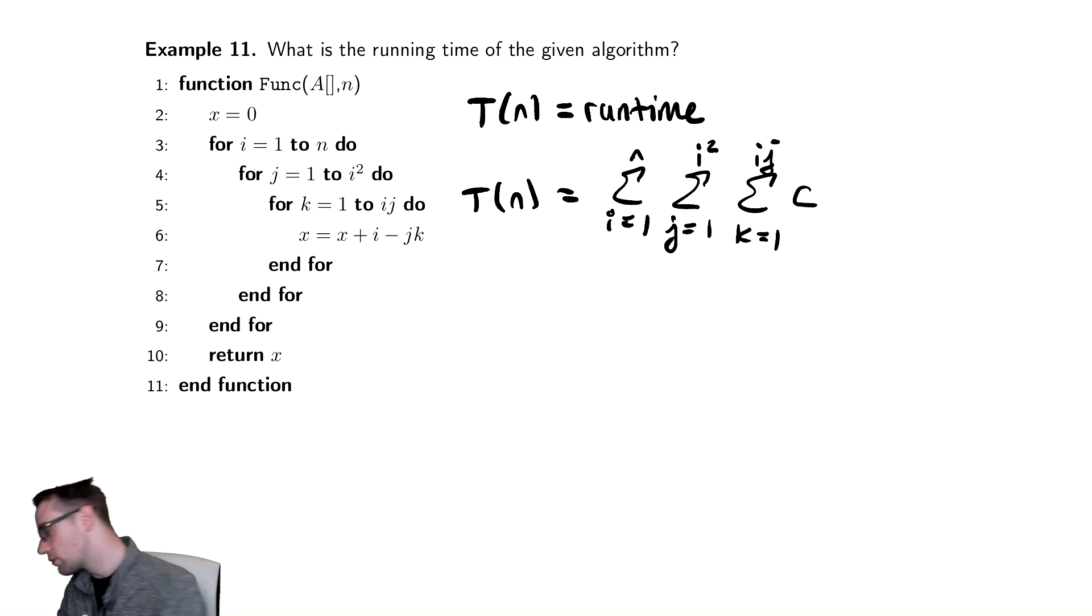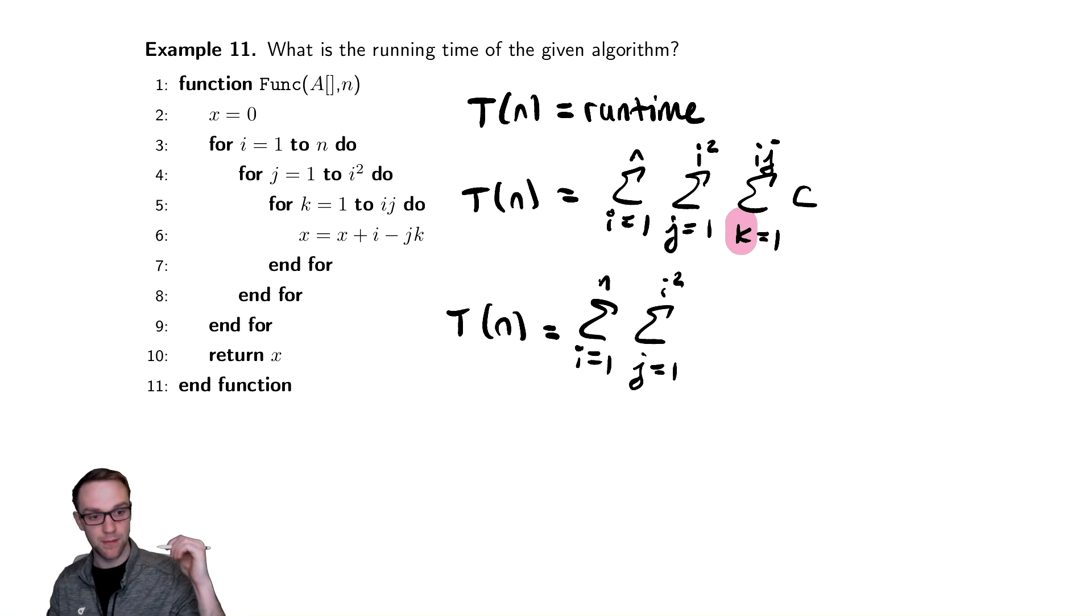So just as we saw before, we start by checking what is the summation index. In this case, it's k. k does not appear inside of the innermost summation, so we begin by simplifying the inner summation. We have the sum from 1 to n and the sum from 1 to i squared remaining entirely untouched. Then that inner summation, we do the inside times the top bound minus the bottom bound plus 1. Just as we've seen a couple of times now, that's just going to be the top bound because our summation starts at 1. So cij.